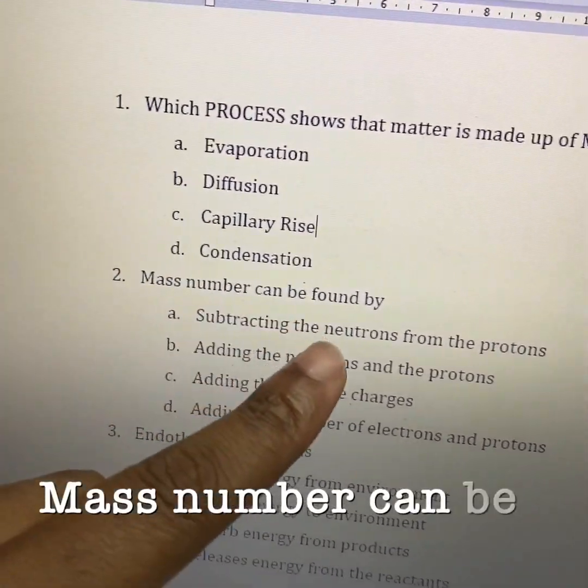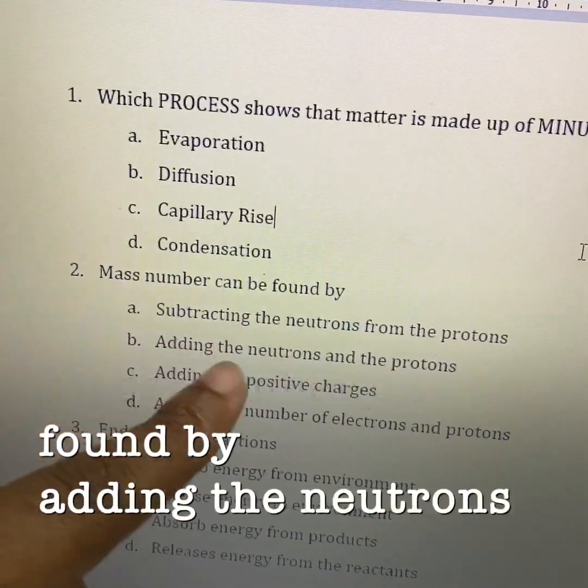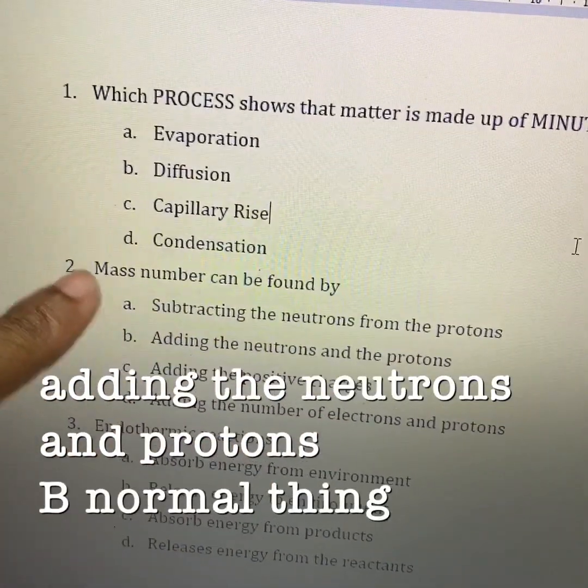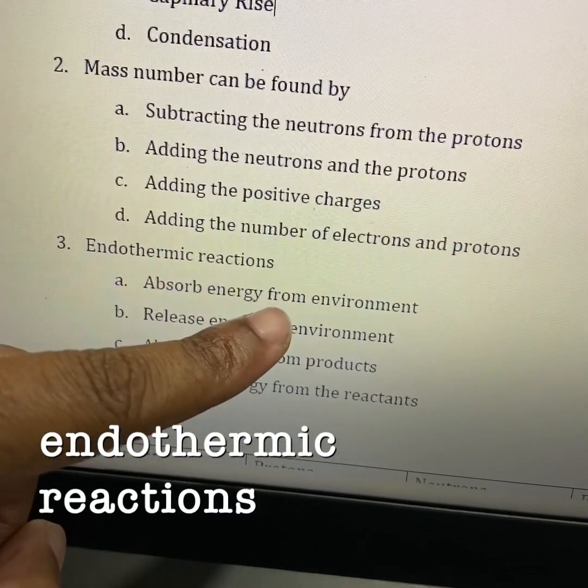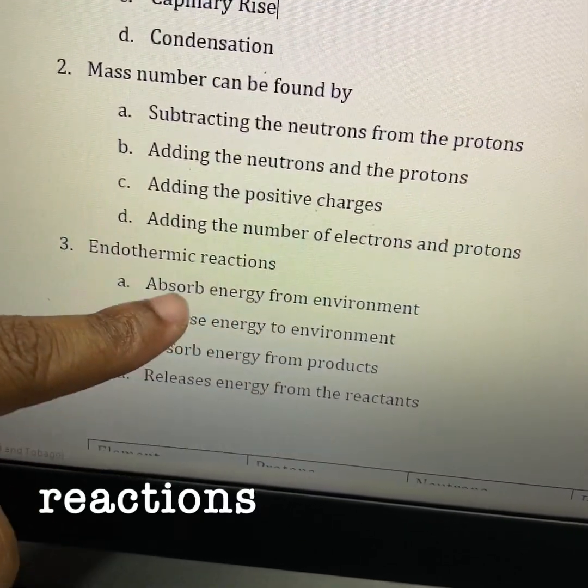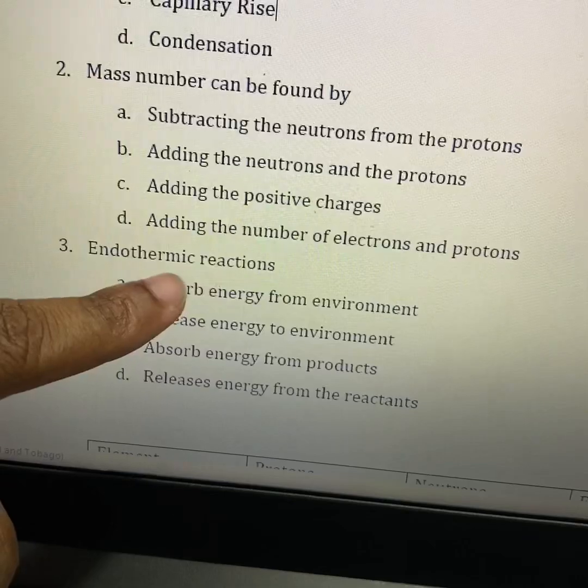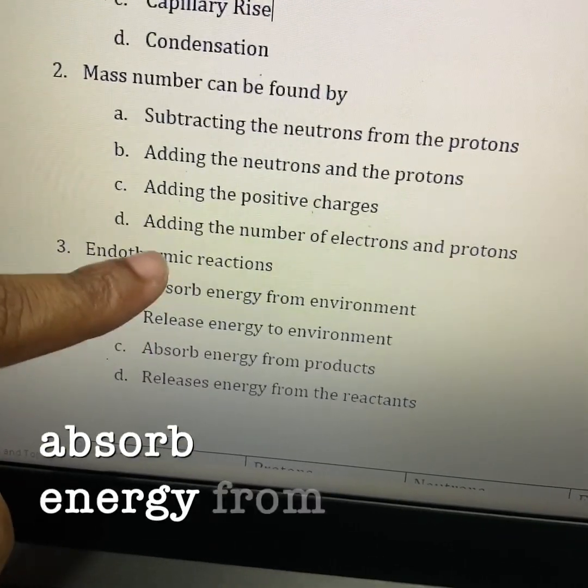Mass number can be found by adding the neutrons and protons. B, number 2. Endothermic reactions absorb energy from environment.